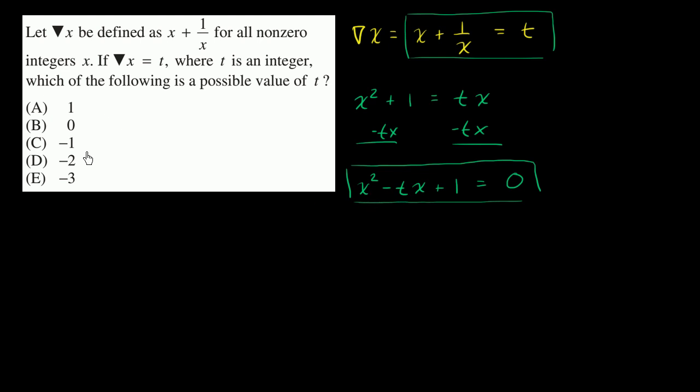So let's just write down all the options over here. If t is equal to one, then this thing is going to be x squared minus one x, or we could just say x squared minus x plus one.